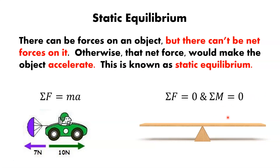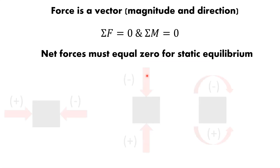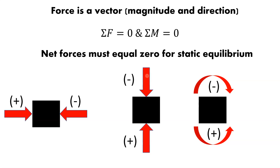In terms of strength of materials, force is a vector with magnitude and direction, and for static equilibrium the net forces have to equal zero. This is where we start looking at a free body diagram — you actually have to balance the forces. The sum of forces acting on an object in one direction needs to be balanced in the equal and opposite direction so the net force comes to zero.